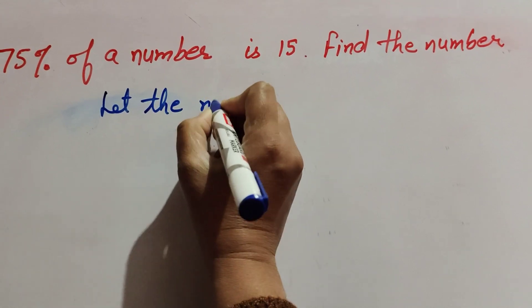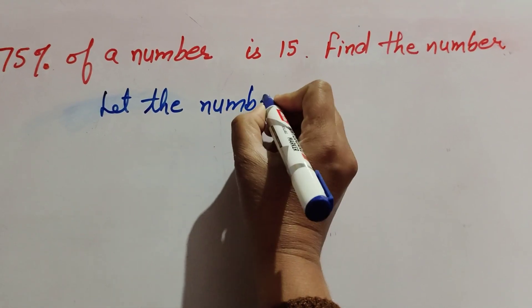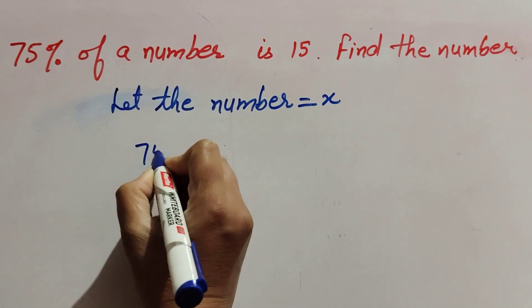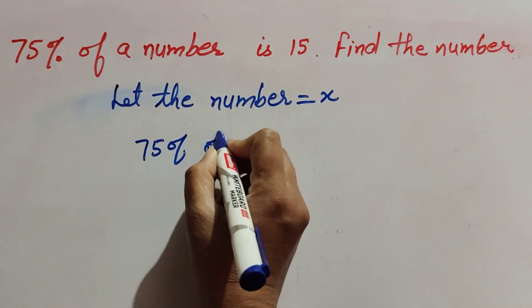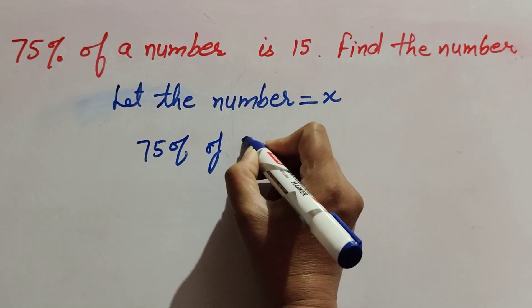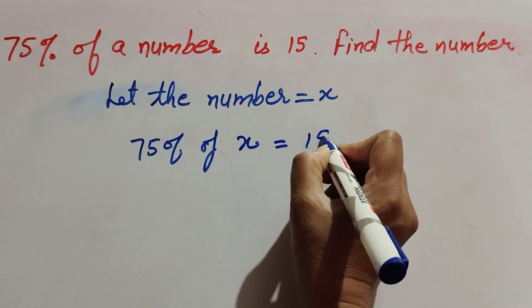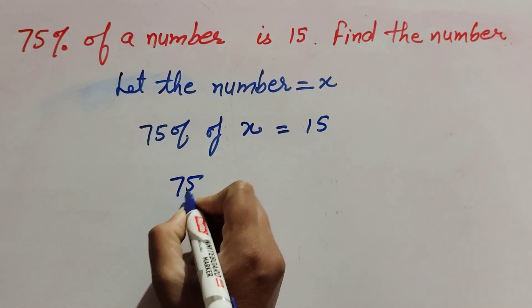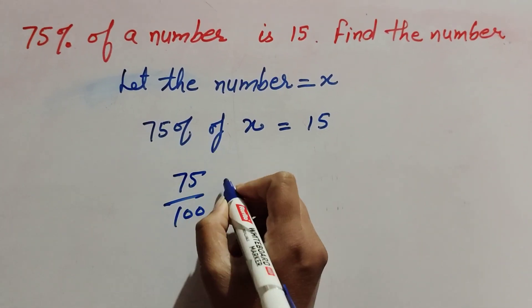Let us suppose the number we are looking for is x. So according to the question, 75 percent of x equals 15. This is 75 over 100, and 'of' means multiply, so 75 over 100 times x equals 15.